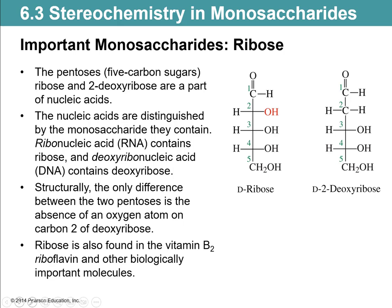So look at ribose and deoxyribose. Count the number of carbons — they're only five carbons, which makes them pentoses. And in front you would have aldo, because the aldehyde is on the end. So ribose and deoxyribose — how are they familiar? You've seen them in the nucleic acids. RNA is ribonucleic acid. The name 'ribo' is because it contains the sugar ribose.